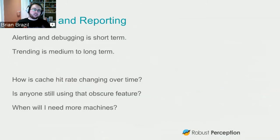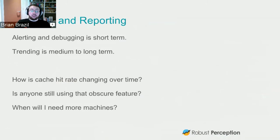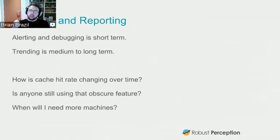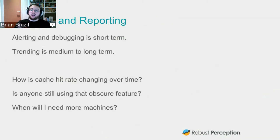The third case is trending and reporting. Alerting and debugging are short-term — minutes to days, maybe weeks. Trending, on the other hand, is months to years. You might want to notice that your cache hit rate is changing over time and add or remove machines. If it's down to 1%, get rid of the machines — they aren't helping. If it's up to 90%, maybe you can trim elsewhere. If you're instrumenting features and no one has used a feature in two years, you can safely remove that code. Most commonly, there's capacity planning: when will you need more machines? Lots of trending and reporting you need for both engineering and business purposes.